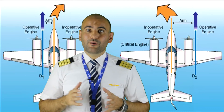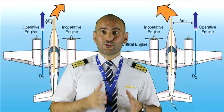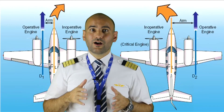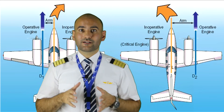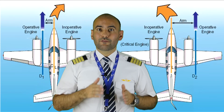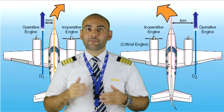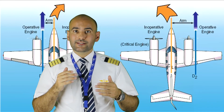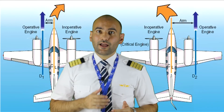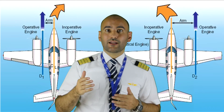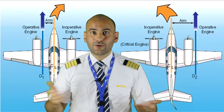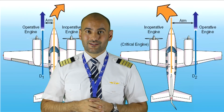Twin-engine aircraft powered by turbojet or turbofan engines are not normally considered to have a critical engine, because failure of any engine has the same aerodynamic adverse effect as the opposite one, and all systems are equally shared on both engines.